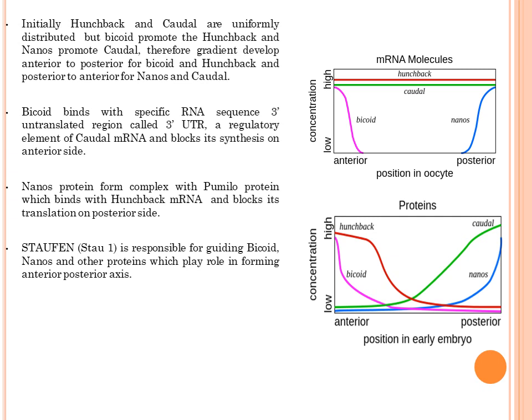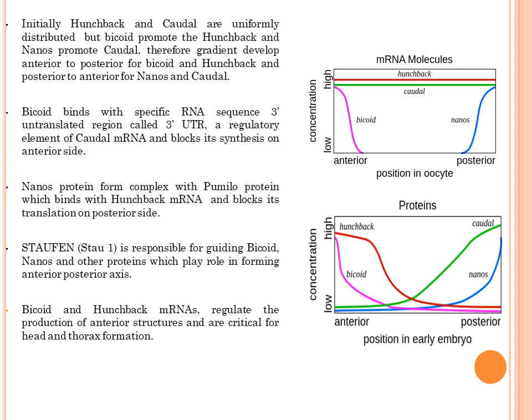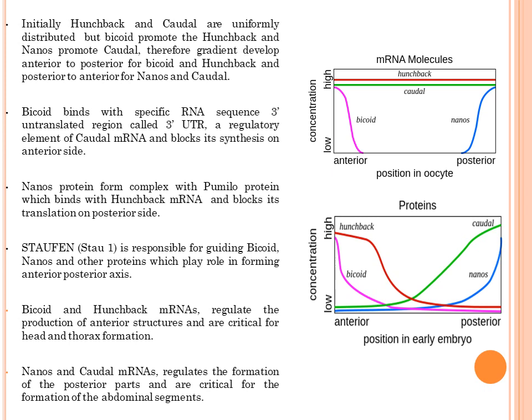Staufen is responsible for guiding bicoid, nanos and other proteins which play role in forming anterior to posterior axis. Bicoid and hunchback messenger RNA regulate the production of anterior structures and are critical for head and thorax formation. While nanos and caudal messenger RNA, which are present at the posterior side, regulate the formation of the posterior part and are critical for the formation of abdominal segments.